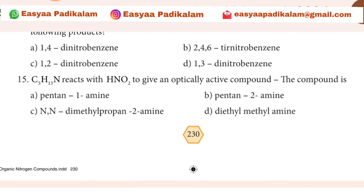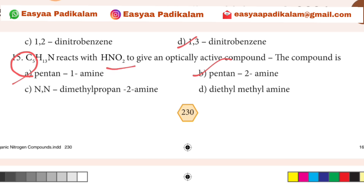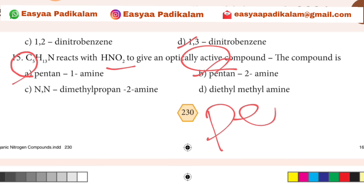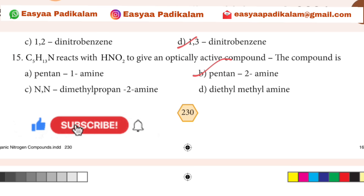Question 15: C5H13 — which isomer is optically active? You can use the pen for more active. 2-aminopentane is optically active.